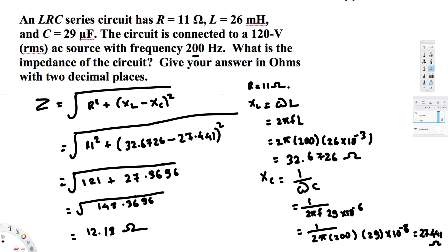Finally, taking the square root of 148.3696, we get 12.18 ohms. This is our final answer to two decimal places. That's how we do this kind of problem — I hope this helps, thanks for watching.